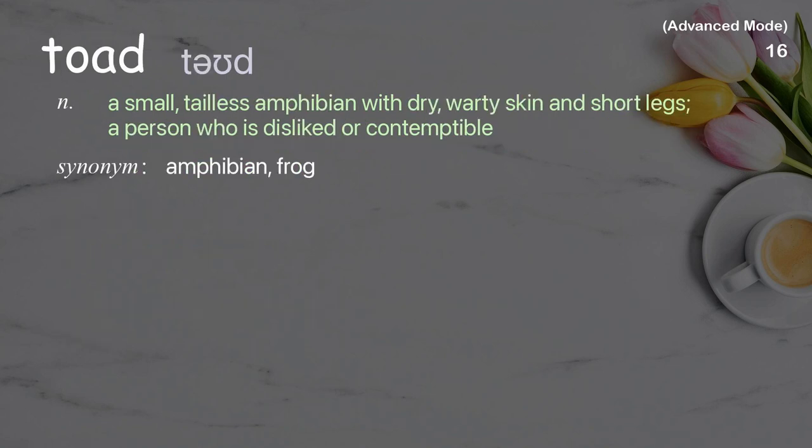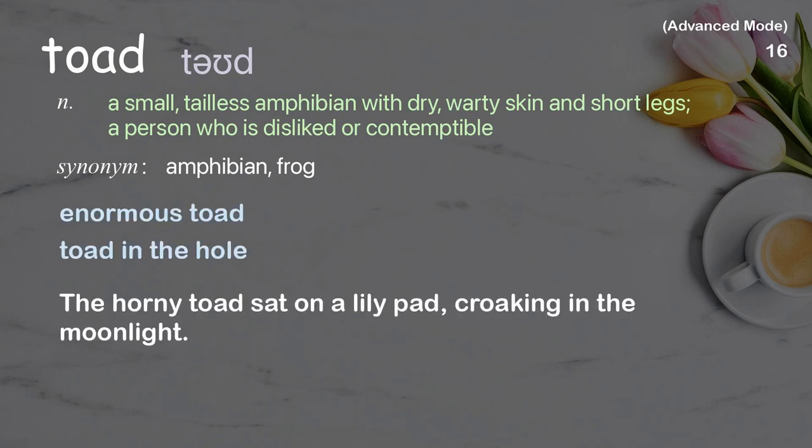Toad. A small, tailless amphibian with dry, warty skin and short legs. Also refers to a person who is disliked or contemptible. Examples: enormous toad, toad in the hole. The horny toad sat on a lily pad, croaking in the moonlight.